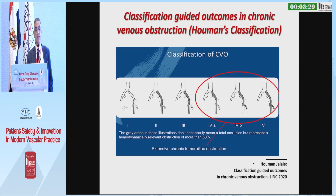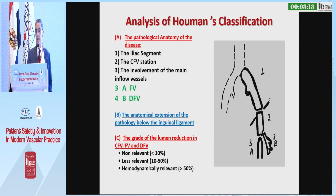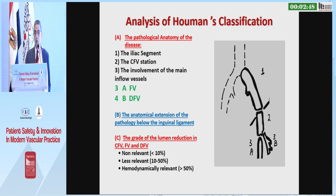The most interesting classification is the Raju classification. He described a classification of left common iliac vein occlusion into five types of increasing severity. The pathological anatomy is classified by iliac segment — number one; the common femoral vein station — number two; involvement of the inflow — type 3a femoral vein and type 3b profunda vein. The most important feature is the grade of luminal reduction in the common femoral vein and profunda: non-relevant less than 10%, risk-relevant between 10 and 50%, and hemodynamically relevant more than 50%.